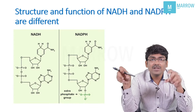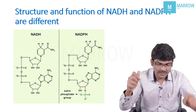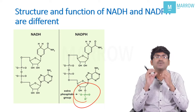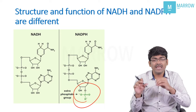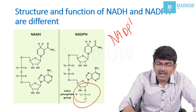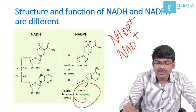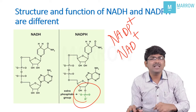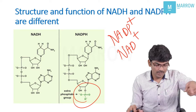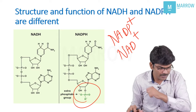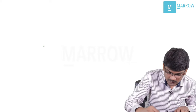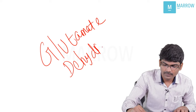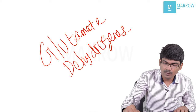NADH and NADPH are different — you should understand that. The difference is a phosphate group. Our enzymes are so specific; certain enzymes use NADP⁺ as coenzymes. There is only one enzyme which can use either of these — do you remember which enzyme can use both? That is your glutamate dehydrogenase.